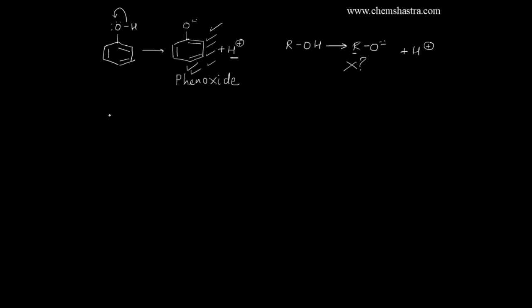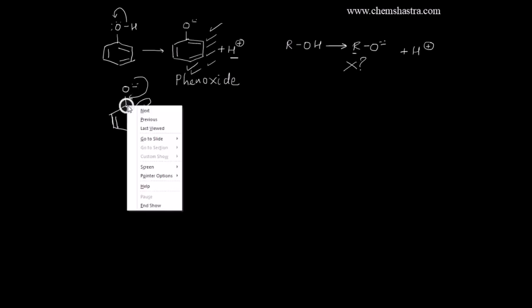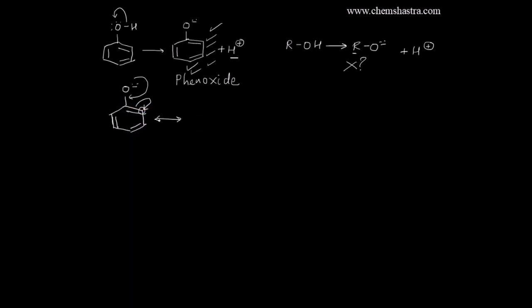Now let's look at the resonating structures of the phenoxide ion. The phenoxide ion has a benzene ring with alternating single and double bonds, attached to an oxygen atom with a negative charge. This negative charge delocalizes onto the benzene ring. The carbon-carbon bond opens in favor of the second carbon atom — negative charge goes there, and the oxygen donates its lone pair to carbon one, forming a carbon-oxygen double bond in the first resonating structure.